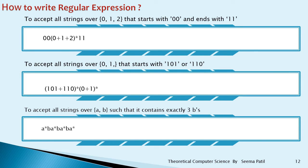To accept all strings over {0, 1, 2} that start with 00 and end with 11: write 00 at the start and 11 at the end. In between, there can be any number of 0, 1, 2, so write (0 + 1 + 2)*. The regular expression is 00(0 + 1 + 2)*11.